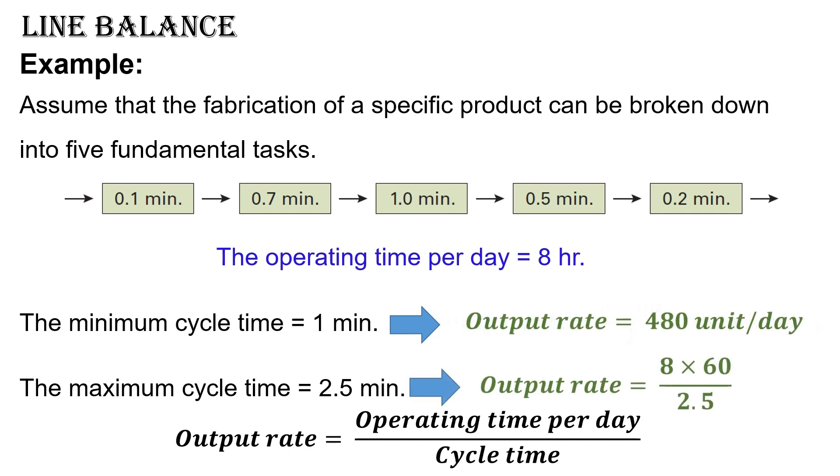With a cycle time of 2.5 minutes, the output would be 8 multiplied by 60 divided by 2.5 equals 192 units per day. Assuming that only one production line is deployed, the output selected for the line must be between 192 units per day and 480 units per day.